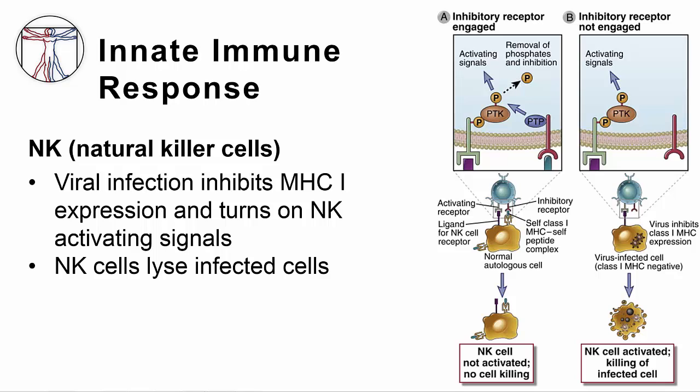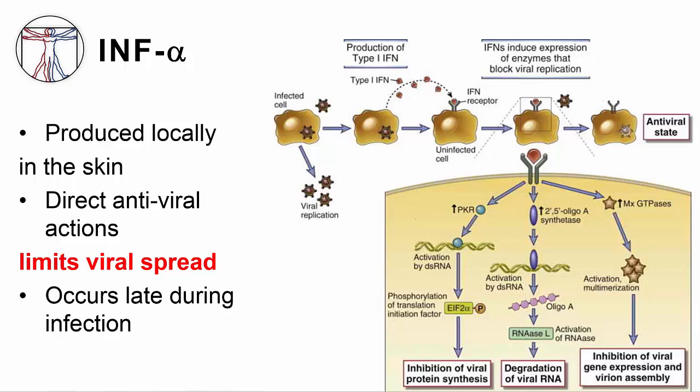In uninfected cells, MHC class 1 molecules engage inhibitory receptors, keeping NK cells from lysing other cells. Once MHC class 1 expression is lost, the inhibitory receptor signal is gone, the NK cell is activated, and the infected cell is lysed. Another important response to viral infections are interferons. Interferon alpha comes later in pathogenesis and is locally produced in the skin, with direct antiviral properties including inhibition of viral protein synthesis and gene expression, leading to decreased virion assembly and degradation of viral RNA. Collectively, these processes lead to viral killing and help limit disease.